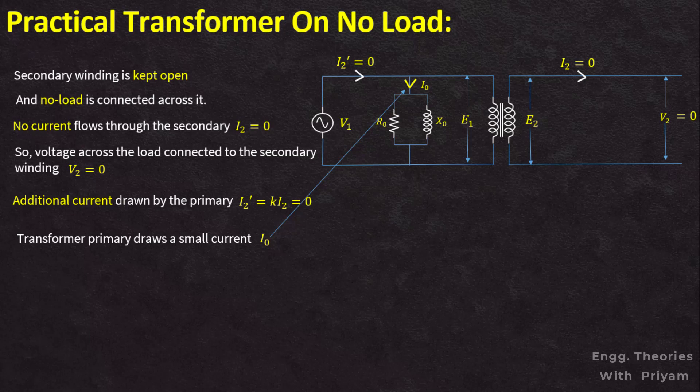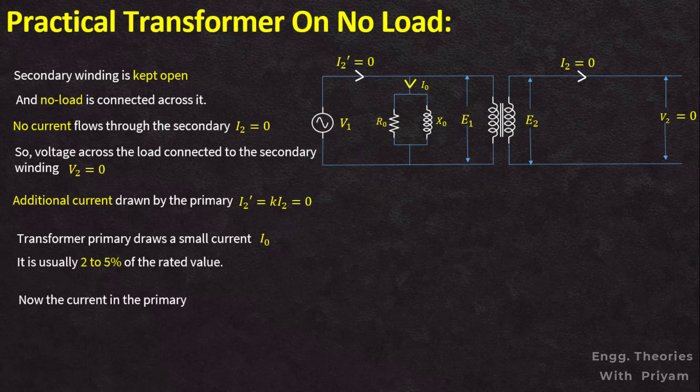This no-load current I₀ is usually two to five percent of the rated value of the full load current. It will be utilized to supply the iron losses, which includes eddy current and hysteresis losses in the core, and a very small amount of copper loss in the primary. The current in the primary, I1, is equal to I₀ plus I2-prime, and since I2-prime is equal to zero, the primary current equals I₀.